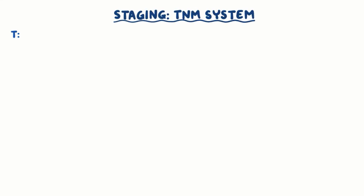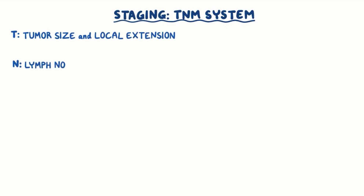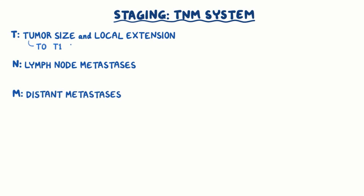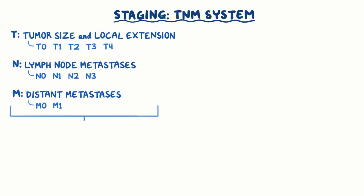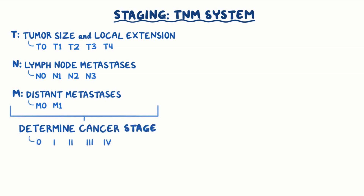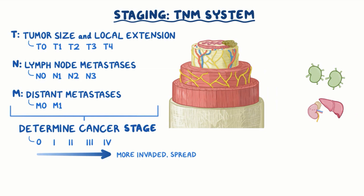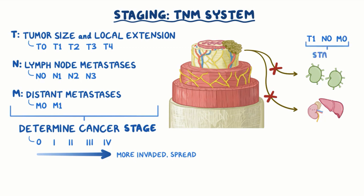Following imaging studies, esophageal cancer is staged according to the TNM system, where T means tumor size and local extension, N stands for lymph node metastases, and M stands for distant metastases. Each category has substages: T0 to T4, N0 to N3, and M0 to M1. The combinations of these substages determine the esophageal cancer stage from 0 to 4 — the higher the number, the more the cancer has invaded and spread. For example, if a tumor has invaded the esophageal submucosa but hasn't spread to lymph nodes or distant organs, it's categorized as T1, N0, M0, which falls under stage 1. But if there are any distant metastases, translating as M1, the tumor is considered stage 4, regardless of TN status.